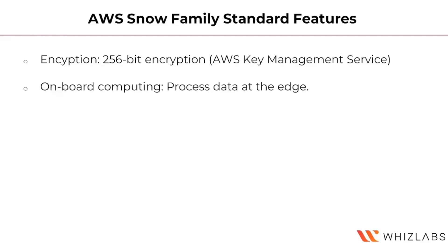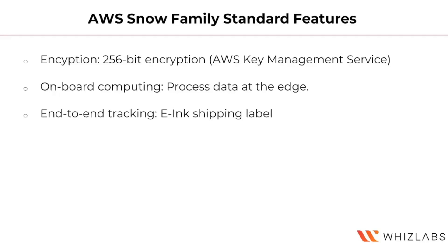The second feature is onboard computing. Snow Family devices have computing resources to collect and process data at the edge. Devices run specific Amazon EC2 instances with processing and storage available to support your applications and AWS IoT Greengrass functions.